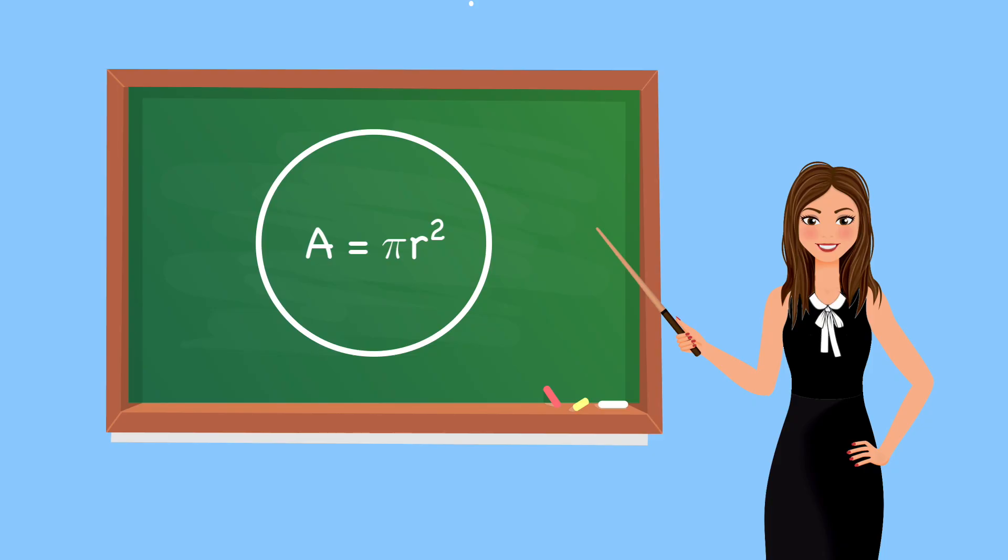Since ancient times, mathematicians have attempted to square the circle. That is, construct a square whose area is that of a corresponding circle. Recall that the area of a circle is Pi r squared. So a circle of radius 1 has an area of Pi. Thus, a corresponding square of area Pi must have sides whose lengths are the square root of Pi.